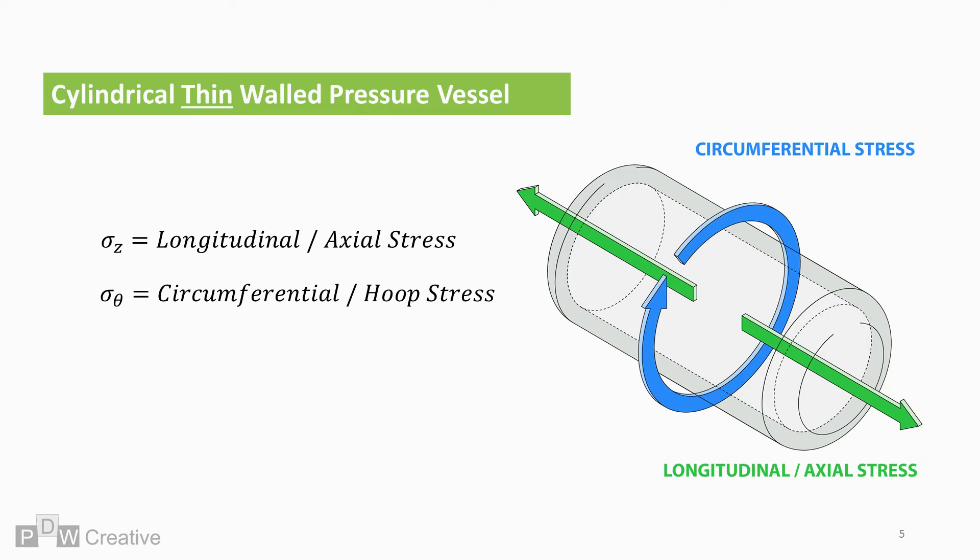But this is where the similarities end. The remaining stress type is radial stress. Stress in this direction occurs throughout the wall thickness. For an internally pressurised vessel, the stress is highest at the innermost radius, and this stress gradually decreases as it reaches the non-pressurised outer shell.